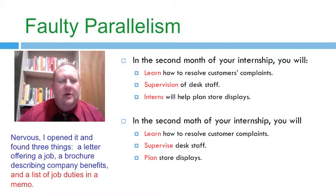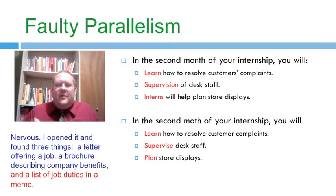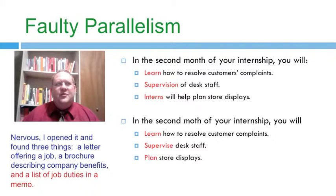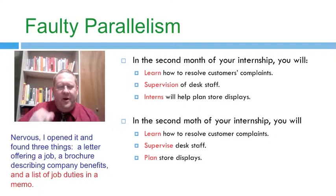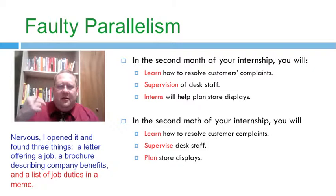There are two more to go. Look at the sample sentence — this is an example of faulty parallelism. 'Nervous, I opened it and found three things: a letter offering a job, a brochure describing company benefits, and a list of job duties in a memo.' Do you notice how the first two are parallel grammatically and logically? A letter... a brochure... But the third has the parallel element 'memo' at the end of the phrase instead of the beginning. The way to make these elements parallel is to say 'a letter, a brochure, and a memo,' so that each coordinated element has the same grammatical and logical structure.